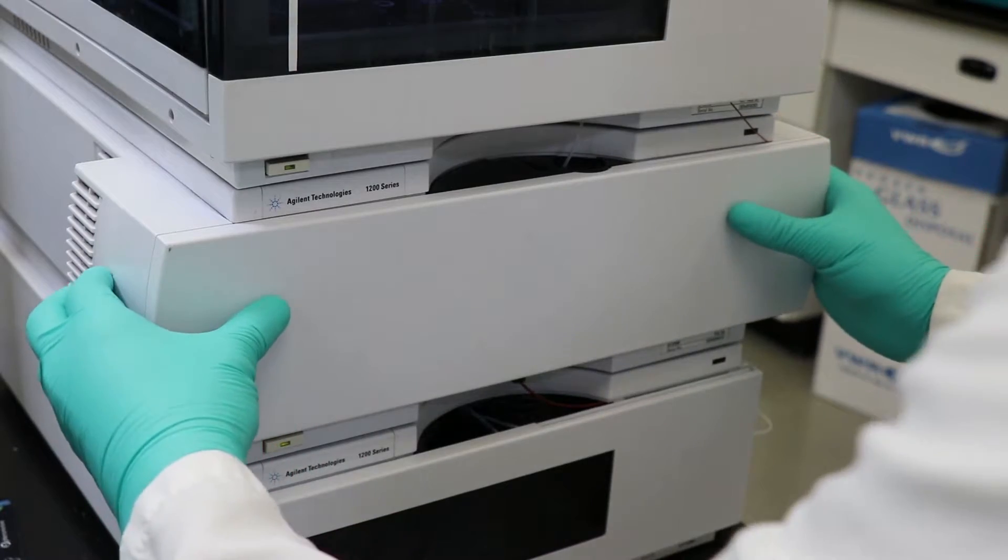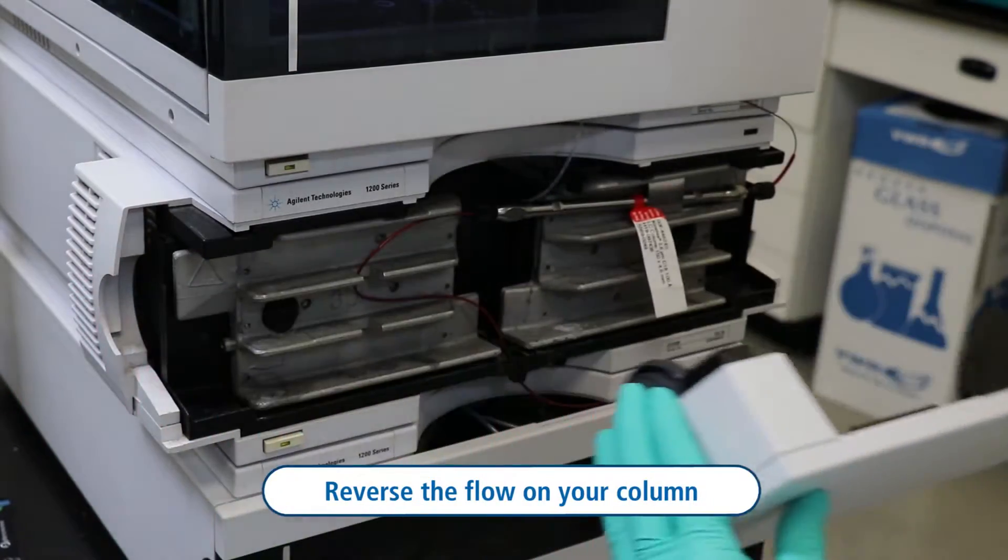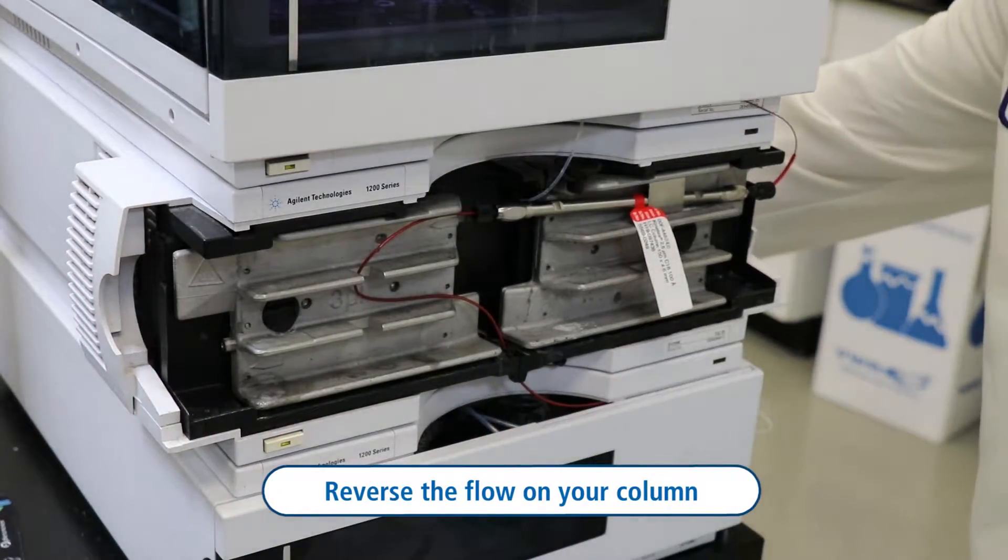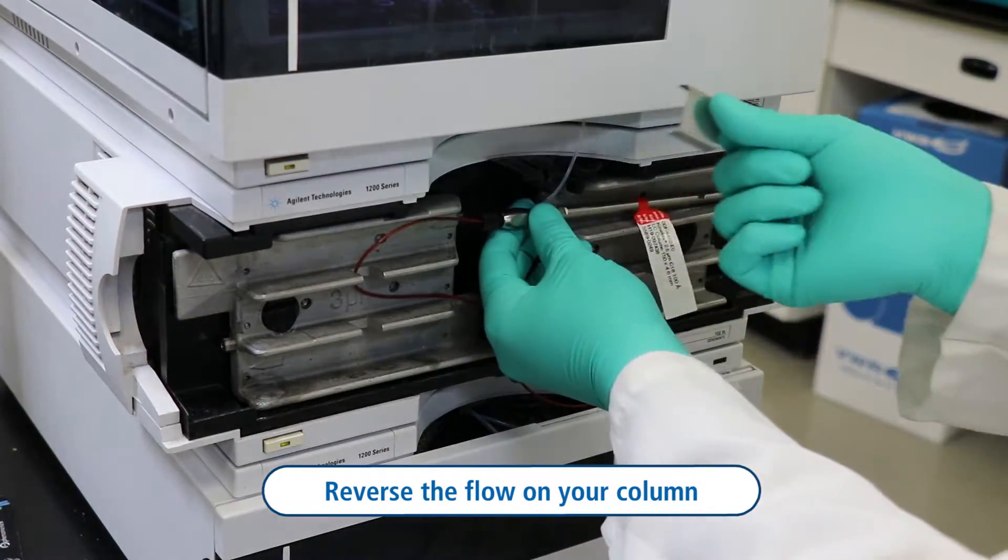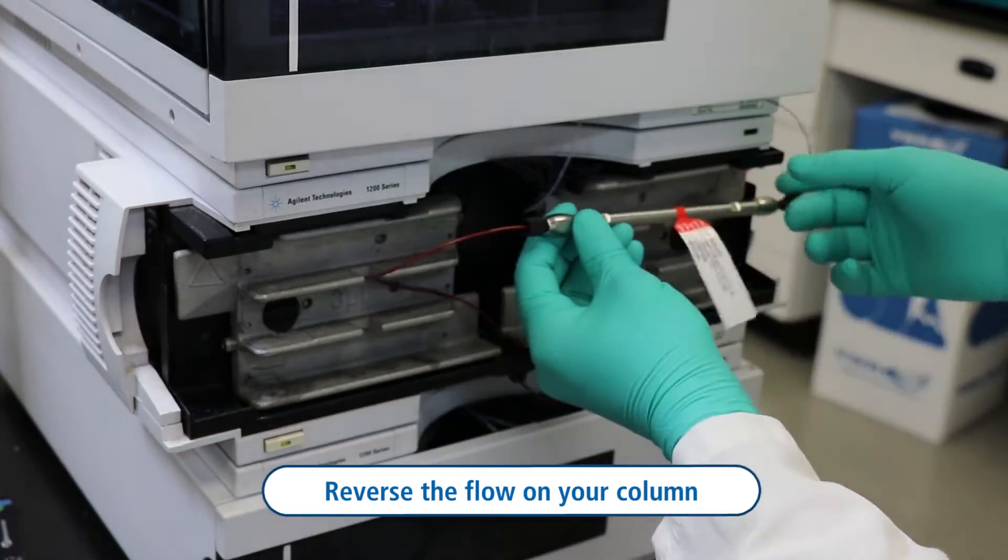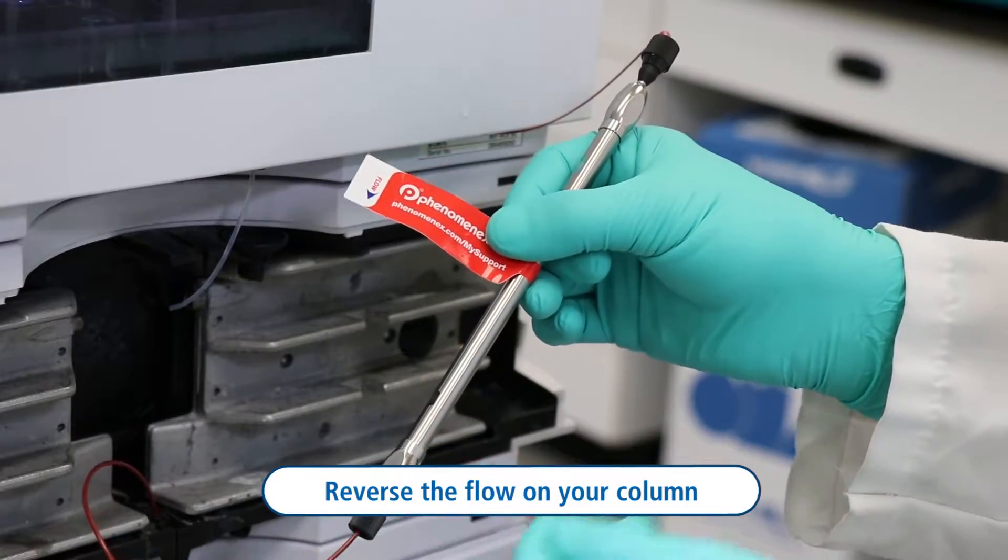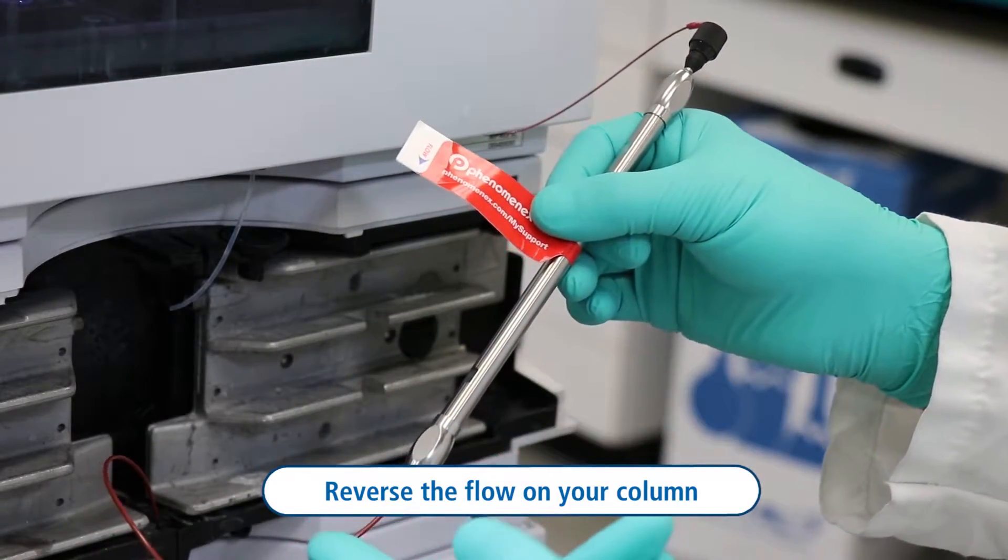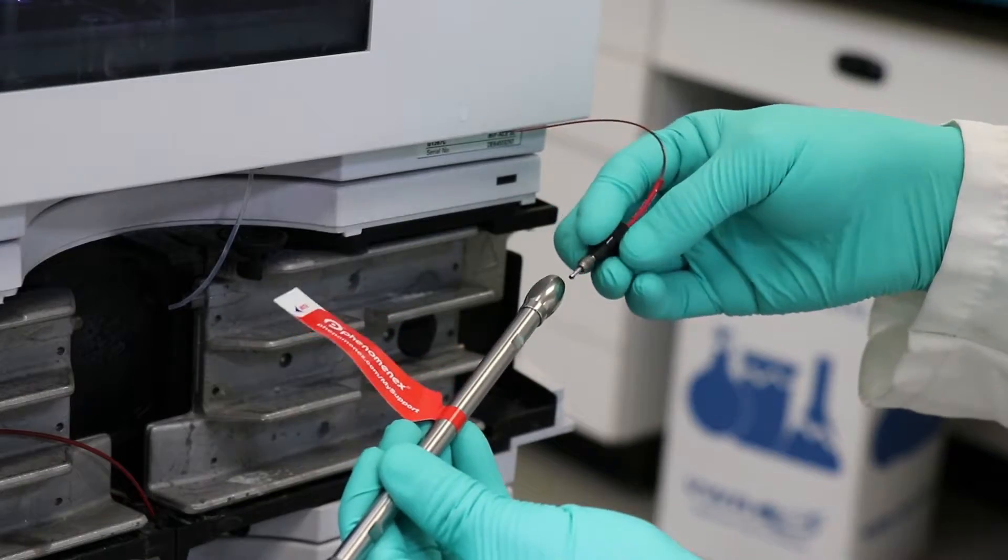The easiest way to remove this is to reverse the flow on your column. You can do this by taking out the column and seeing how the flow direction is currently, and we will go in the opposite direction at half the traditional flow rate that you're running right now on that column.